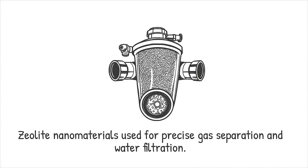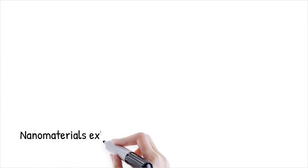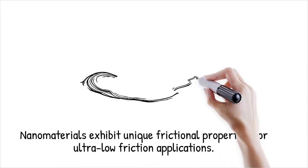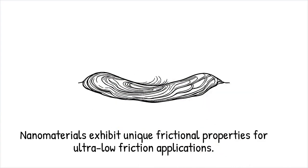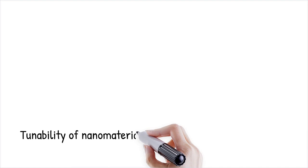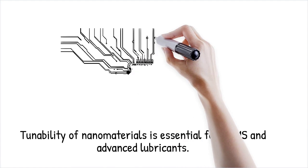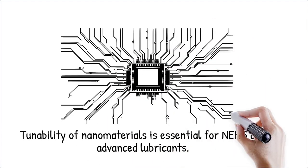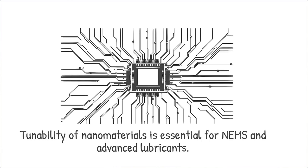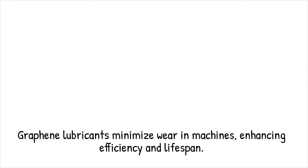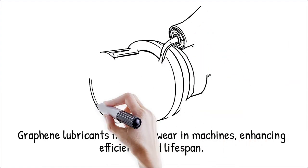Nanomaterials exhibit unique frictional properties where surface forces and van der Waals interactions dominate over bulk mechanical effects. By controlling surface roughness, atomic-scale coatings, and molecular lubricants, researchers can design ultra-low friction nanocomposites. This tunability is essential for nanoelectromechanical systems, NEMS, and advanced lubricants. Nanoscale lubrication effects also enable self-cleaning surfaces and anti-fouling coatings. Graphene-based lubricants reduce wear and tear in machine components, enhancing efficiency and lifespan. It's like putting an ultra-thin layer of oil on a surface, making it nearly frictionless.